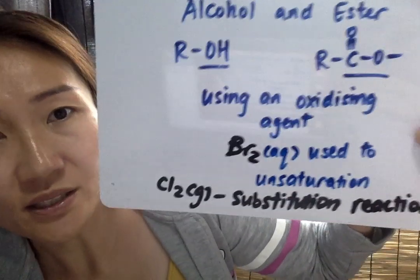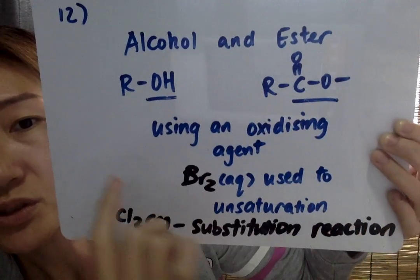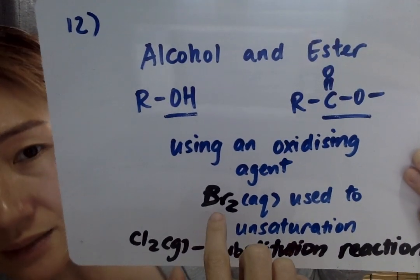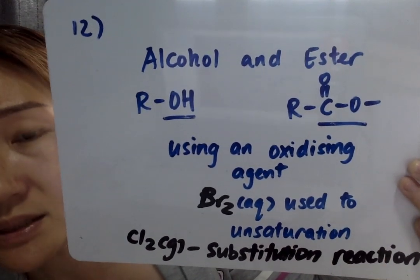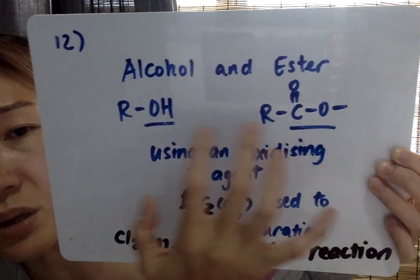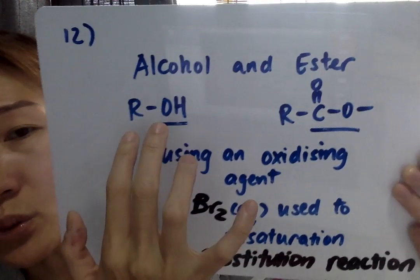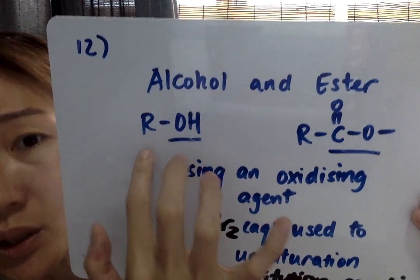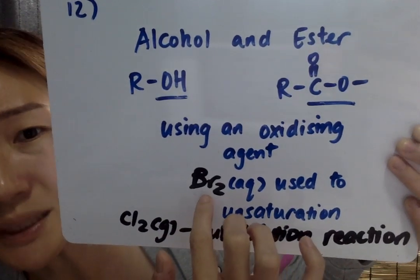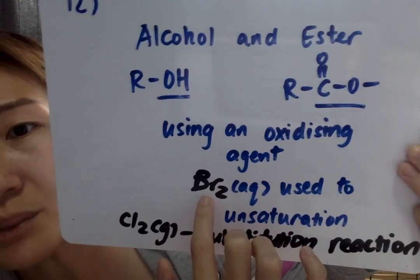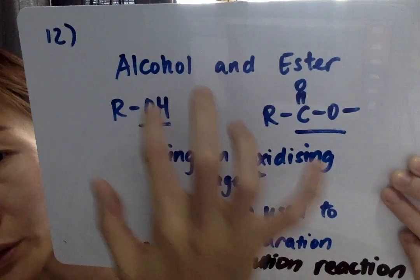Looking at the question, you're supposed to tell these two molecules apart based on their functional group. We cannot use aqueous bromine, because aqueous bromine is used to test for unsaturated C-C double bonds. In these two molecules, we assume the R group does not have C-C double bonds — we are trying to prove the two functional groups are different, so bromination is not an appropriate test.